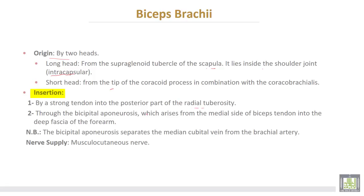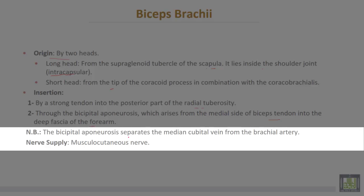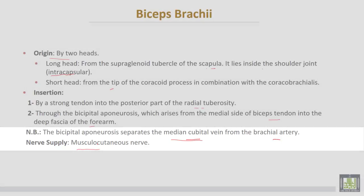The second or accessory insertion is through the bicipital aponeurosis, which arises from the medial side of the biceps tendon into the deep fascia of the forearm. The bicipital aponeurosis separates the median cubital vein from the brachial artery.